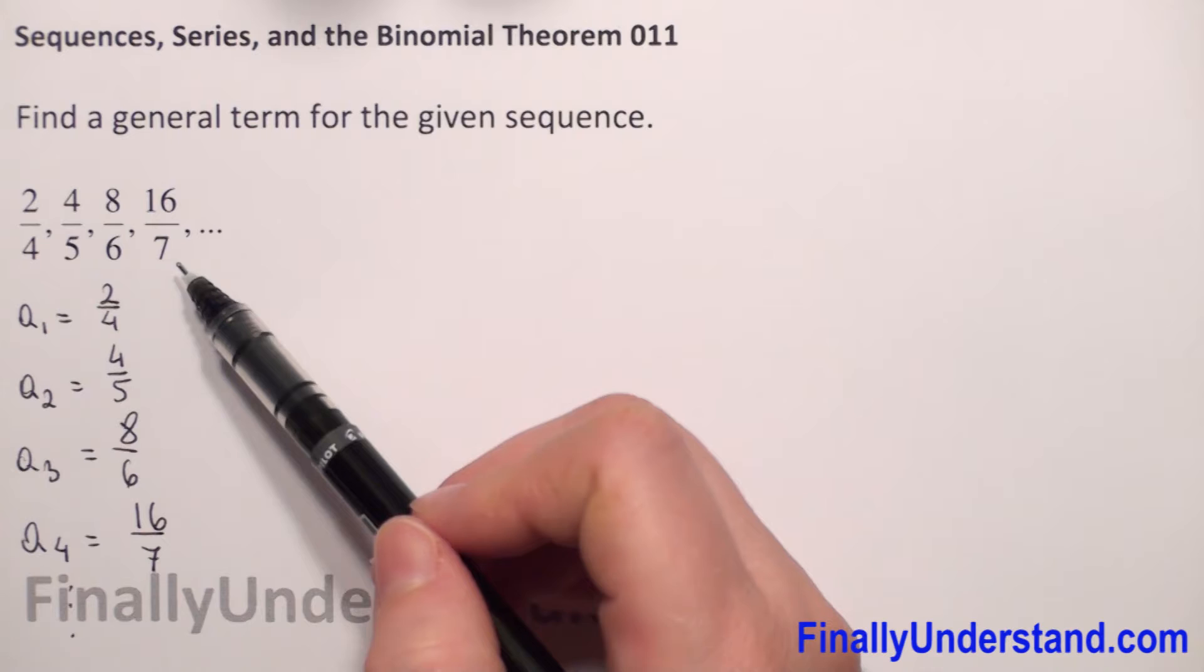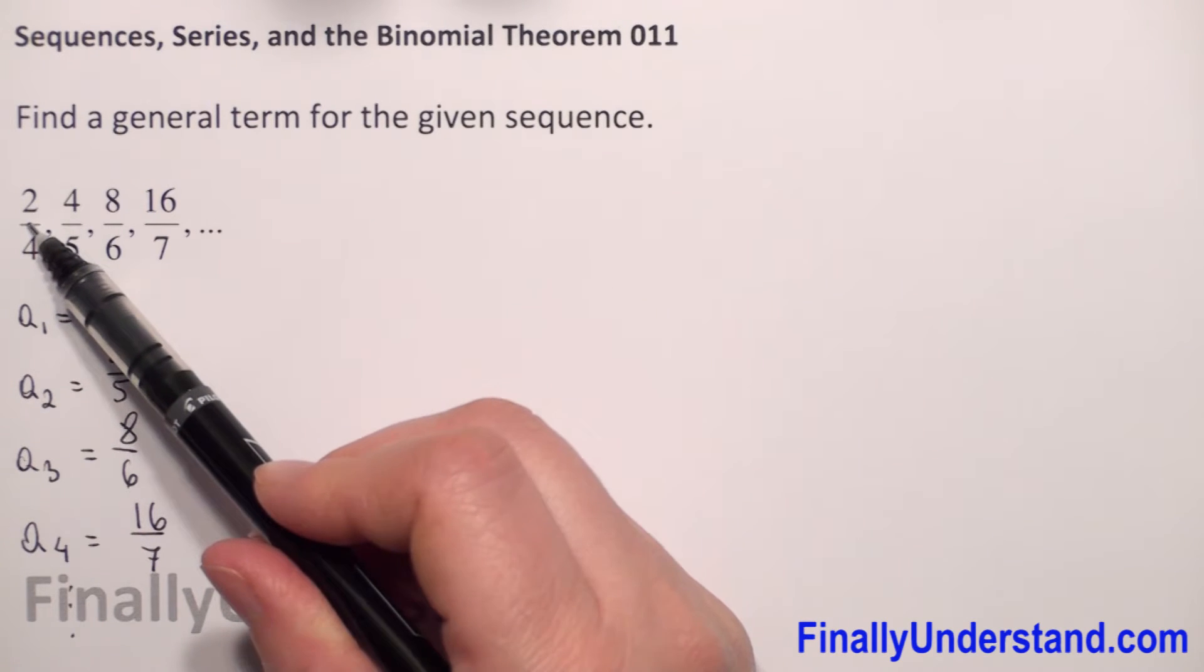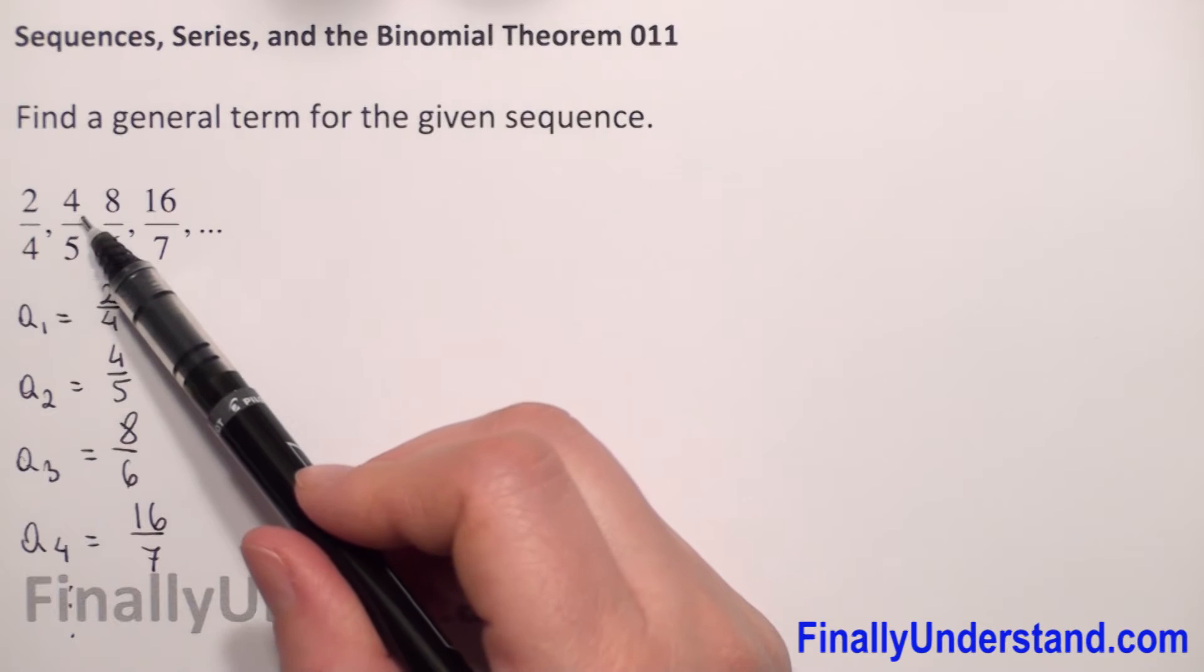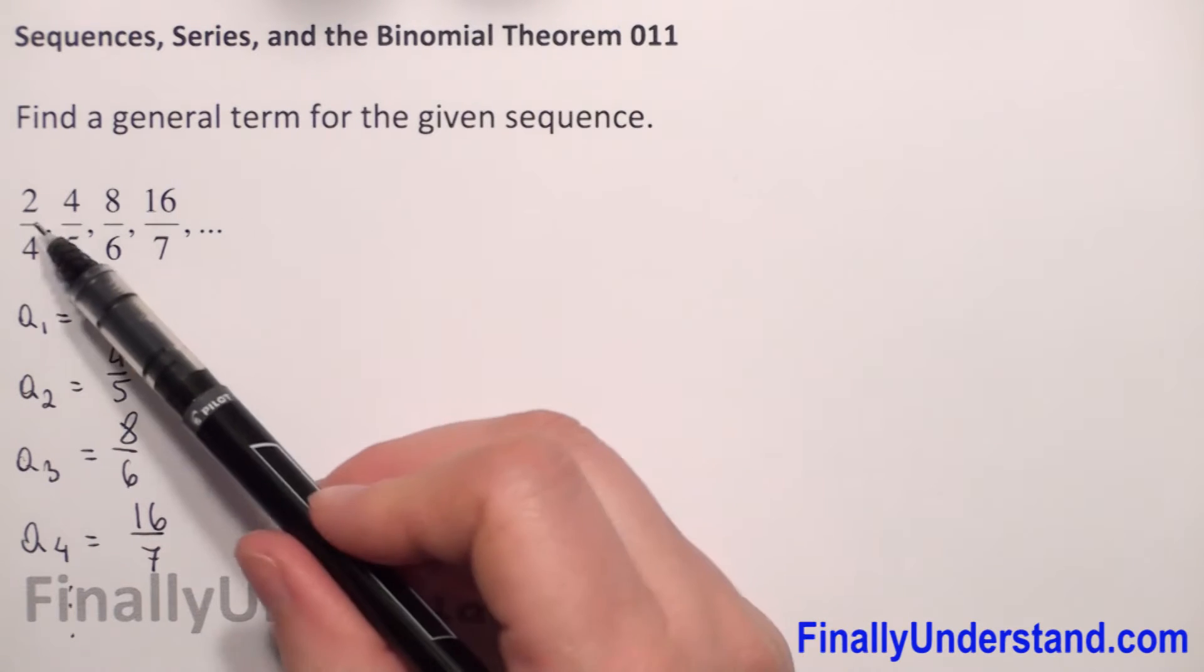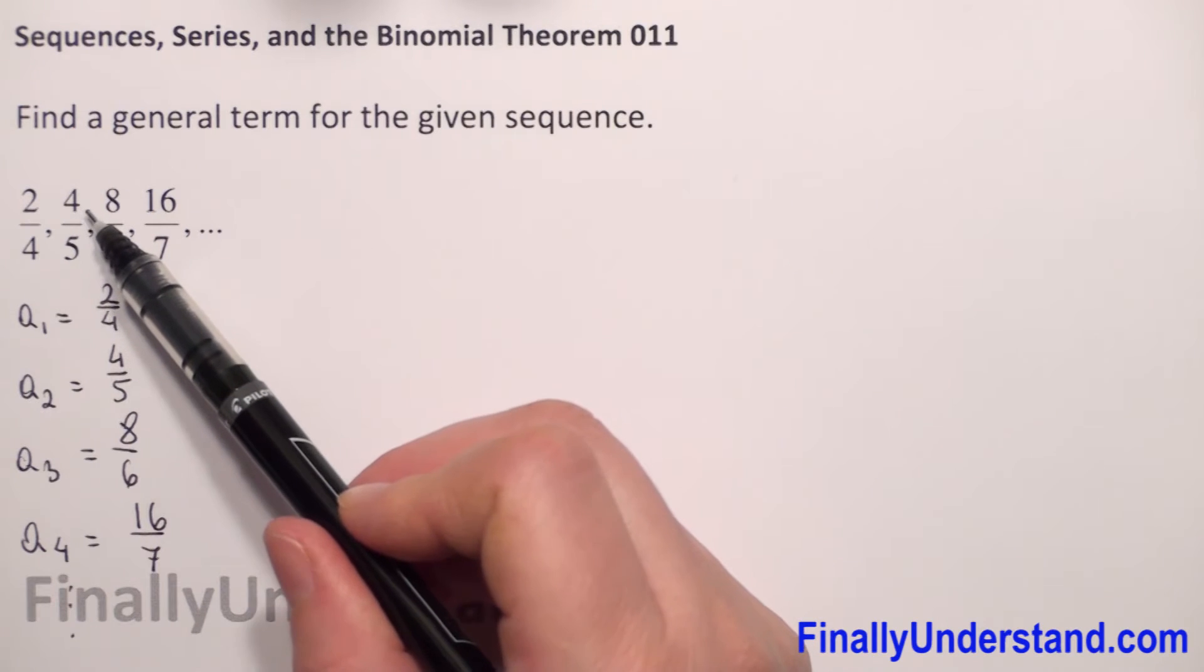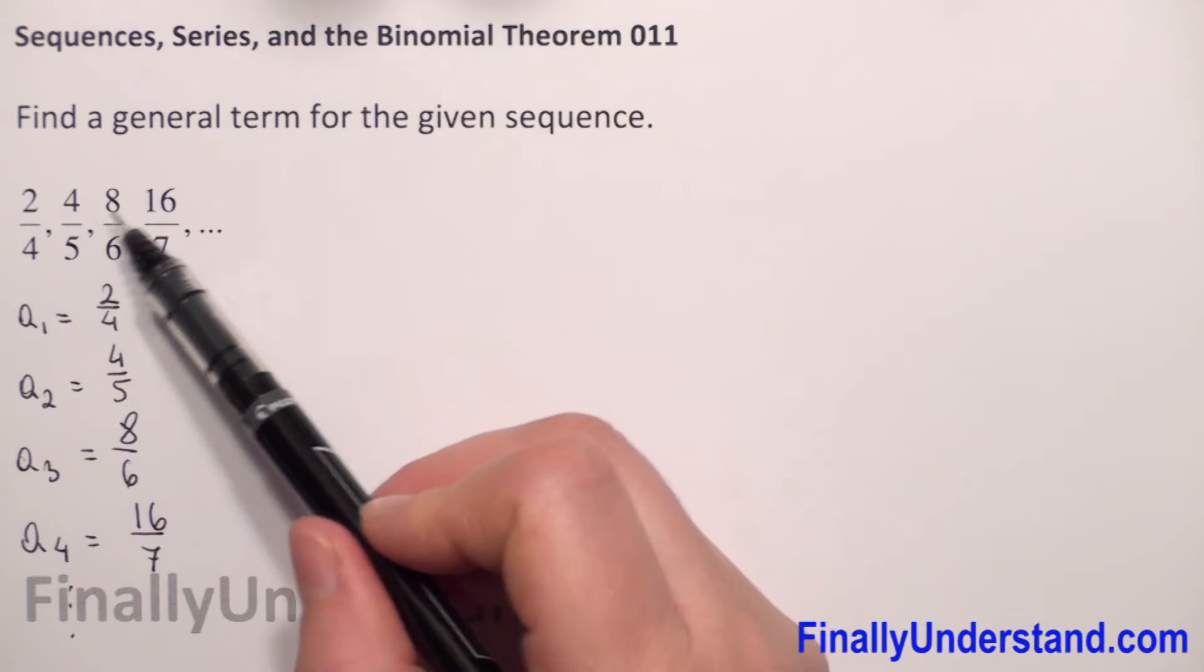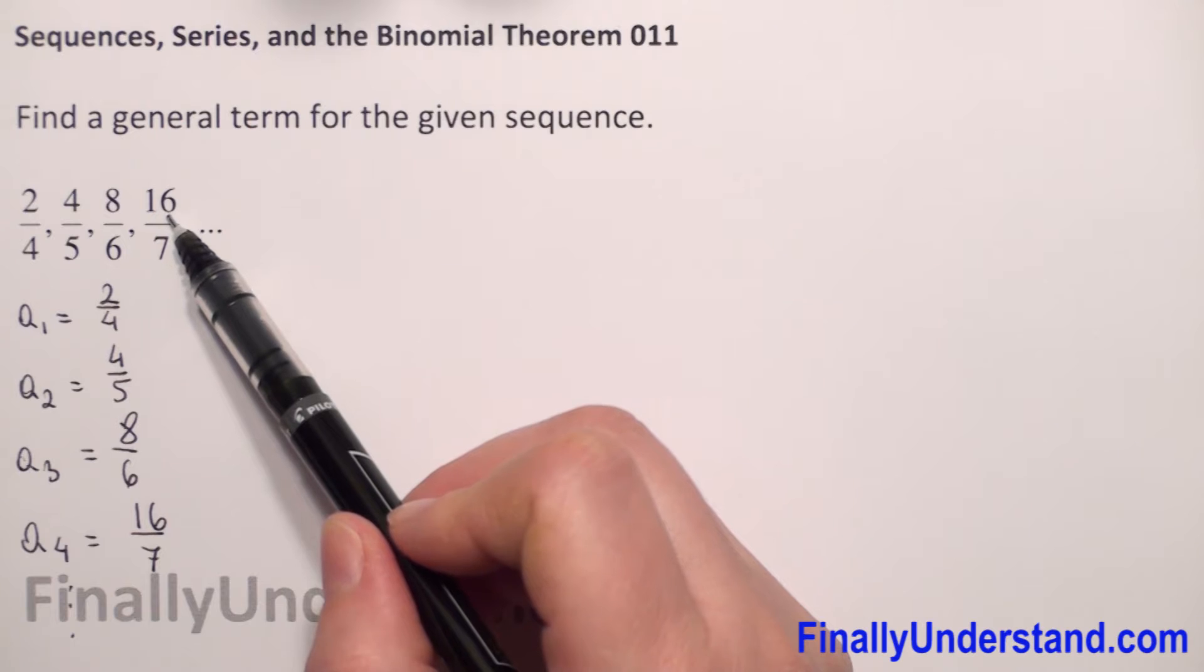We need to find the pattern in these fractions. Our numerator is 2, 4, 8, 16, and so on. We see that we have here powers of 2: 2 to the second power is 4, 2 to the third power is 8, 2 to the fourth power is 16.